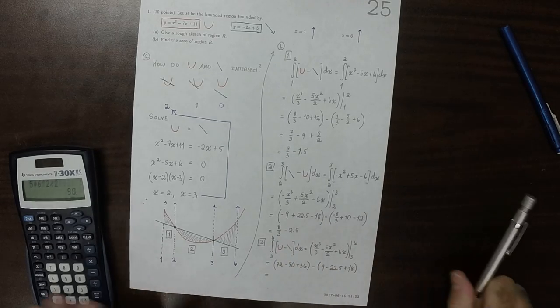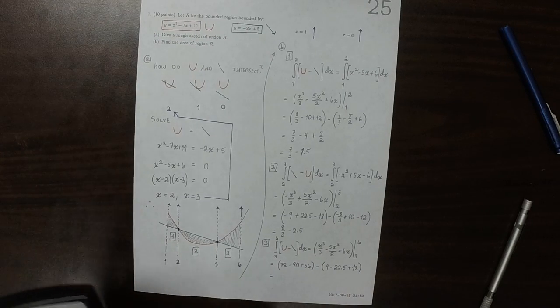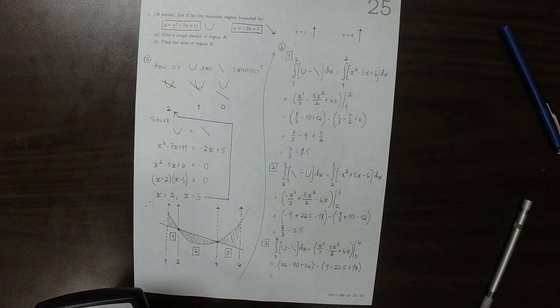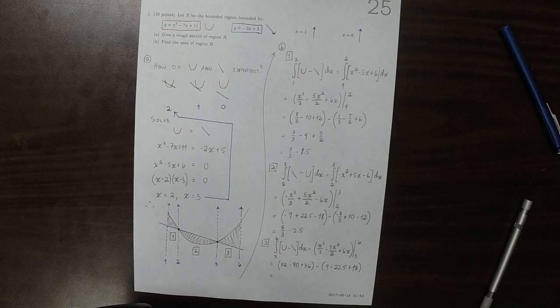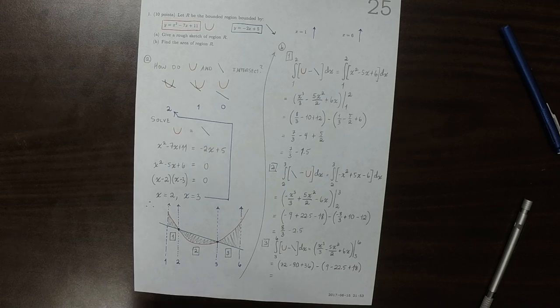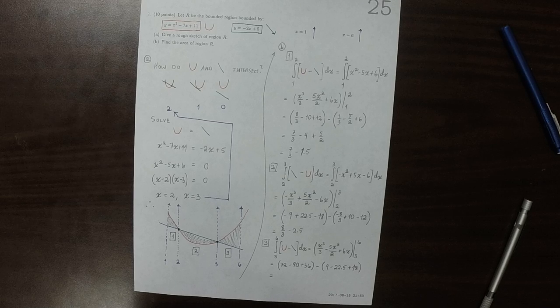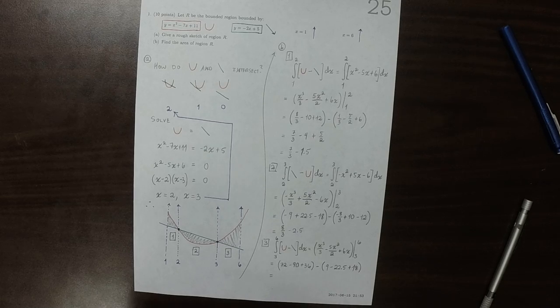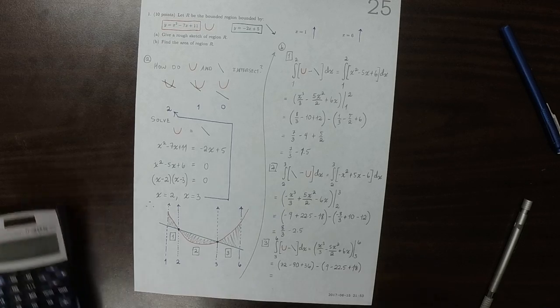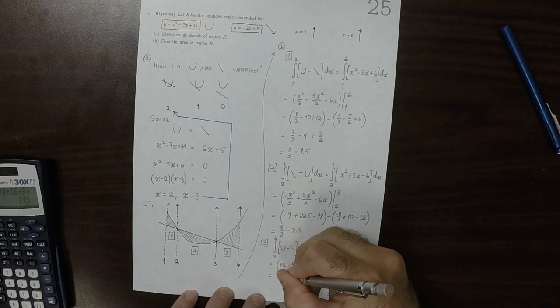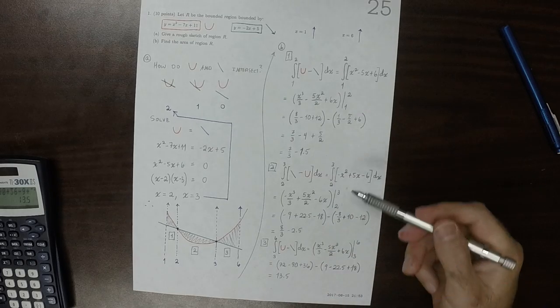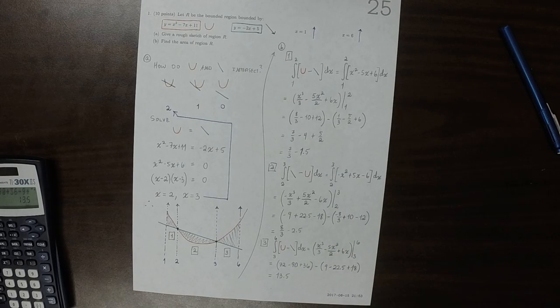So taking those all together, 72 minus 90 plus 36 minus 9 plus 22.5 minus 18. This is 13.5. So that's the area of each individual region, and so if we add them together,